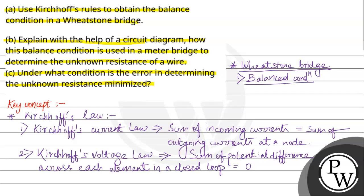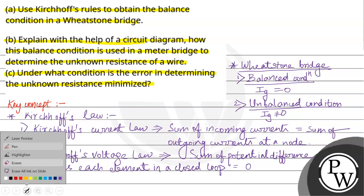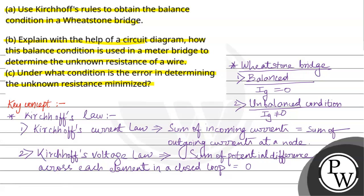In balanced condition, current through the galvanometer, IG, is zero. In unbalanced condition, current through the galvanometer is not zero. With the help of this key concept, we will proceed further.